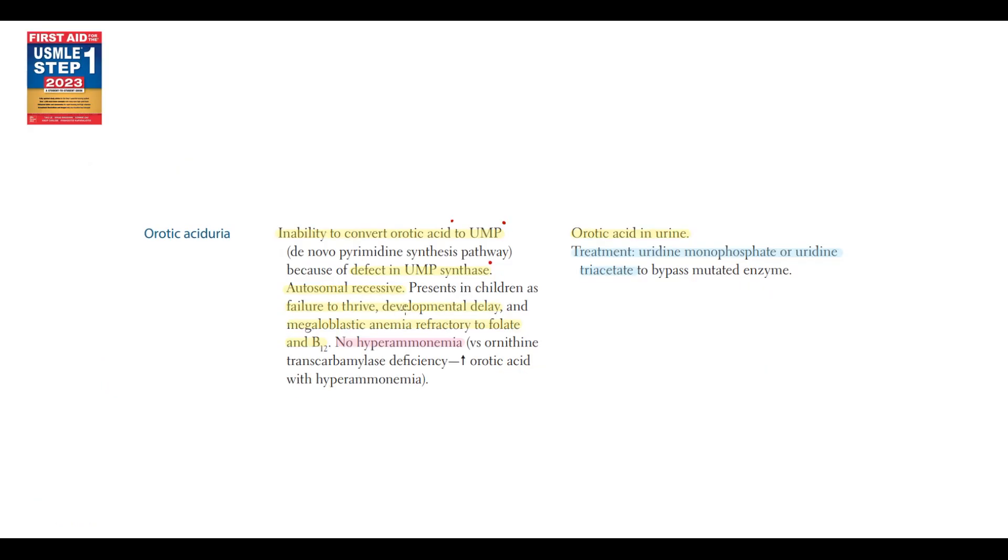So let's summarize. Erotic aciduria is caused by autosomal recessive mutation. The symptoms develop due to the decrease in DNA and RNA synthesis. Typically, it's failure to thrive, developmental delay, and megaloblastic anemia with normal folate and B12 levels. And erotic aciduria does not cause elevation of blood ammonia level. Why is it important? Because we have a second pathology that can cause increasing erotic acid level in the urine: ornithine transcarbamylase deficiency. So this feature helps us in differential diagnosis.